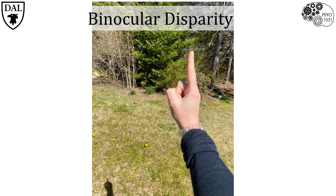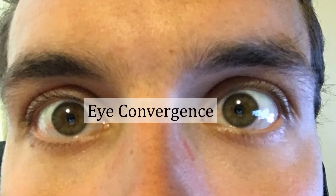In addition to binocular disparity, your brain is also able to use information from the muscles that allow your eyes to move around in their sockets. Put your finger in front of you at about an arm's length and stare at it while moving it closer to your face. As you move your finger towards your face, your eyes turn inwards towards your nose to follow the path of your finger. If you move your finger away again, your eyes turn away from your nose. When your eyes move inward, this is known as convergence. As your eyes converge, the muscles controlling the movement contract, and your brain interprets this contraction to perceive distance.